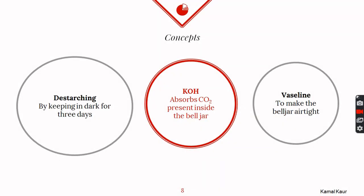Important points from this activity: destarching is done by keeping the plant in dark for two to three days until all the starch in the plant body is consumed. Potassium hydroxide absorbs the carbon dioxide present inside the bell jar, and Vaseline is used to make the bell jar airtight.